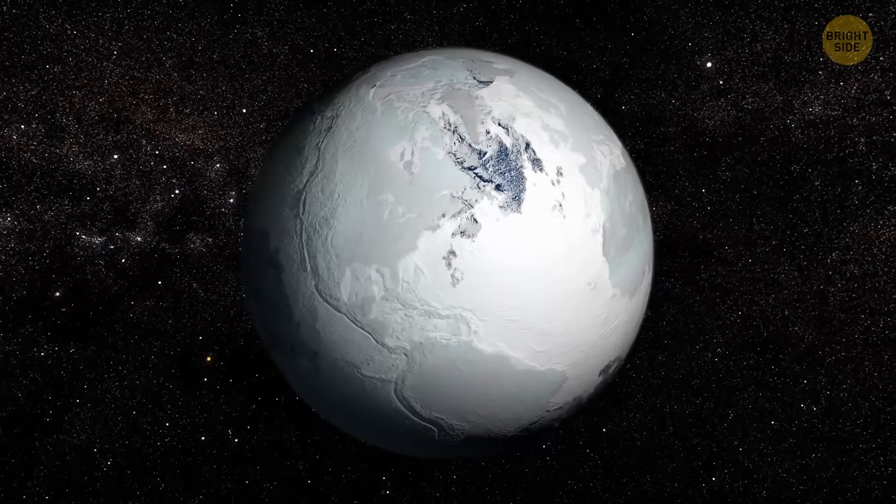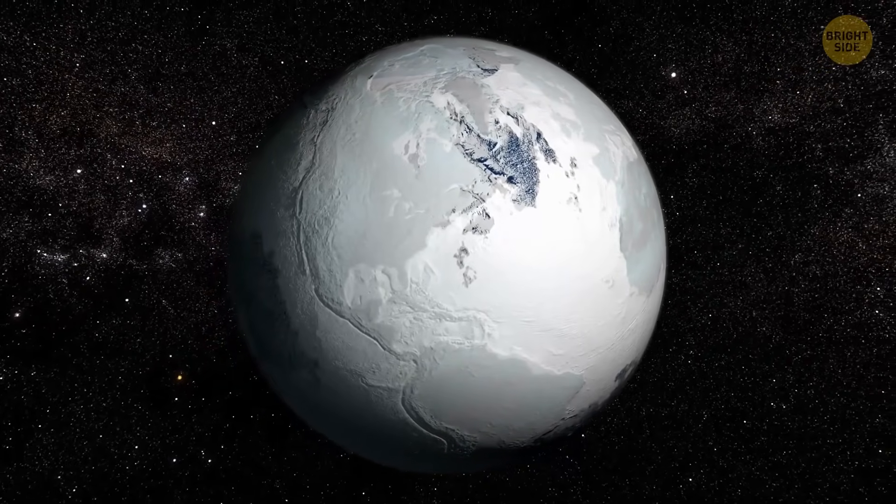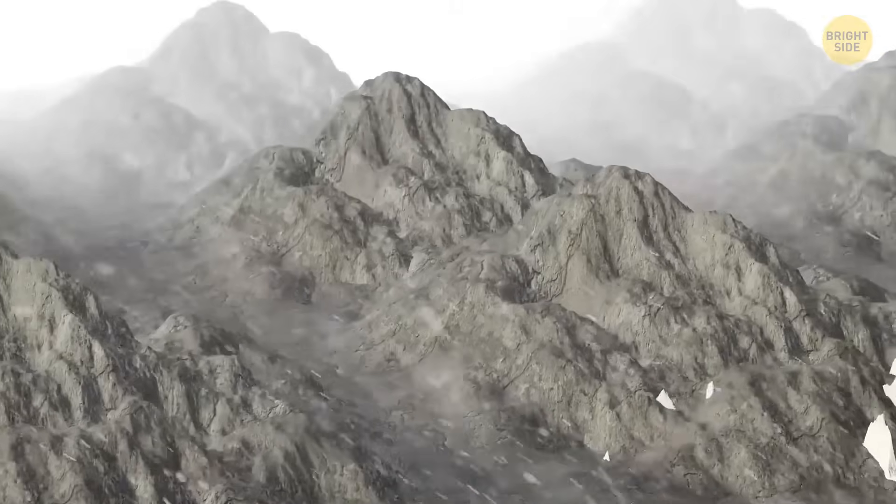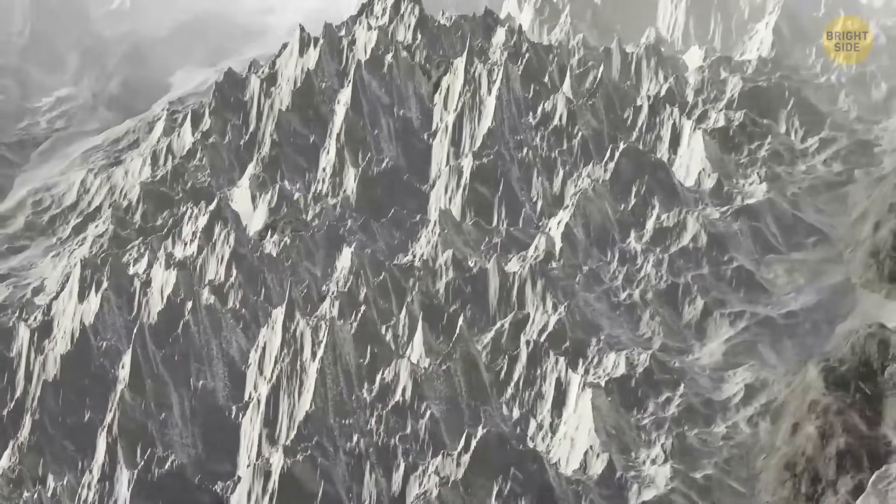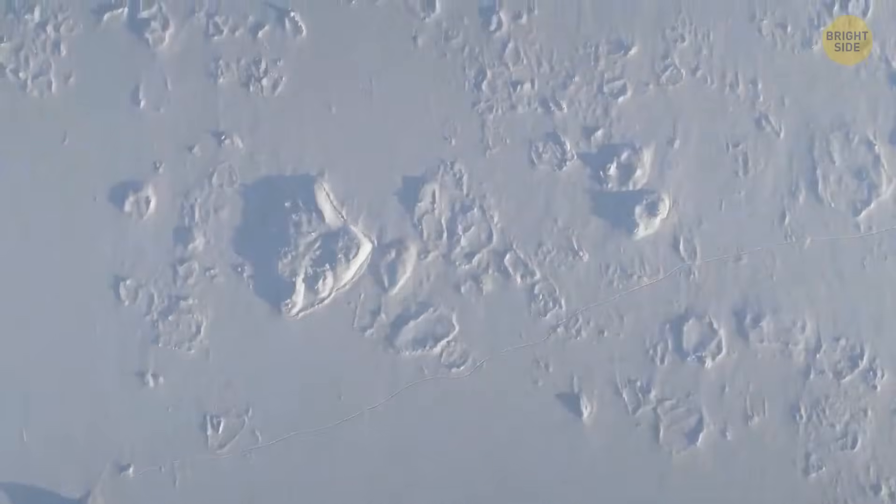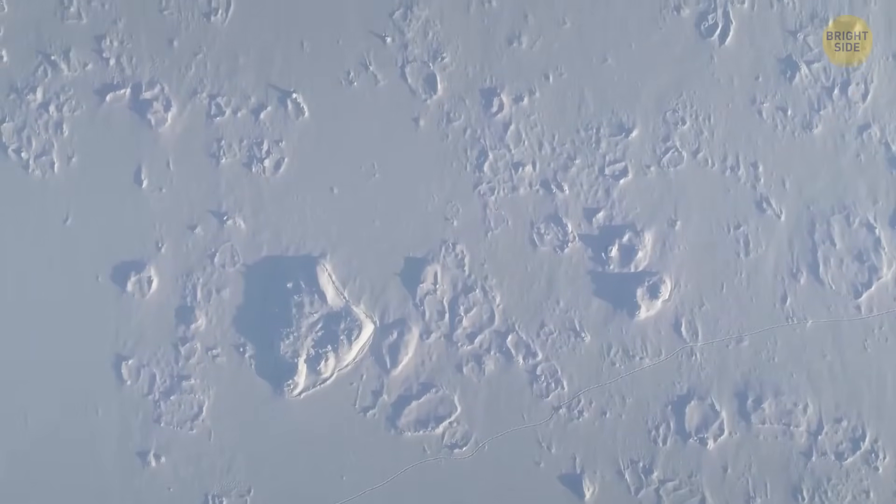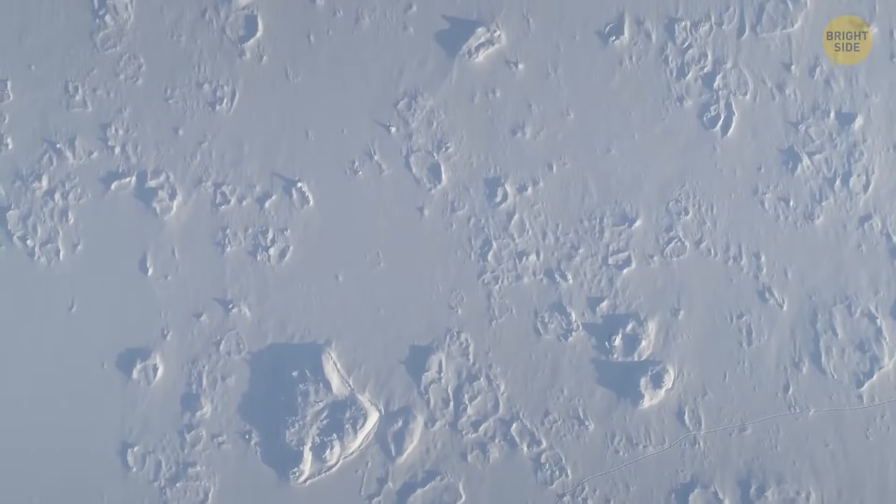The land remained, but now was hidden under ice and snow that got thicker and thicker. To a regular eye, Antarctica turned into a white desert: vast, flat, and featureless.